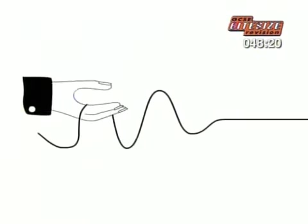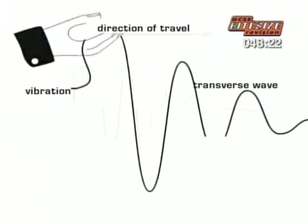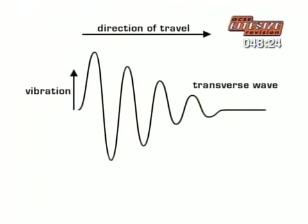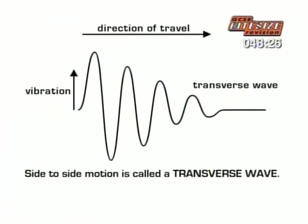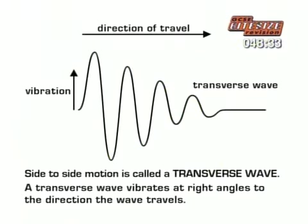You can set up a wave in a rope by moving one end from side to side. Side to side motion like this is called a transverse wave. The vibration is at right angles to the direction the wave travels.